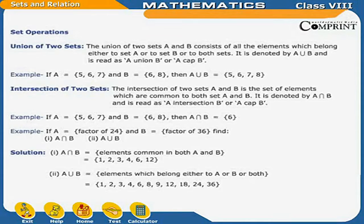Set Operations — Union of two sets: the union of two sets A and B consists of all the elements which belong either to set A or to set B or to both sets. It is denoted by A ∪ B. For example, if A = {5, 6, 7} and B = {6, 8}, then A ∪ B = {5, 6, 7, 8}.